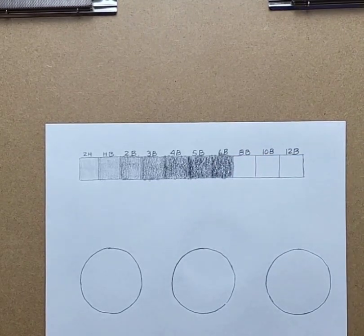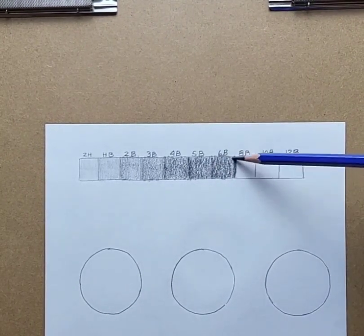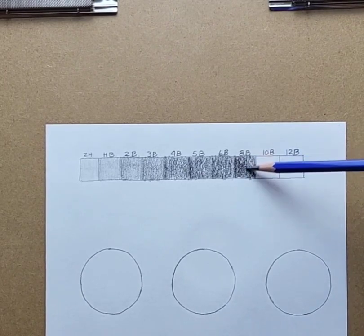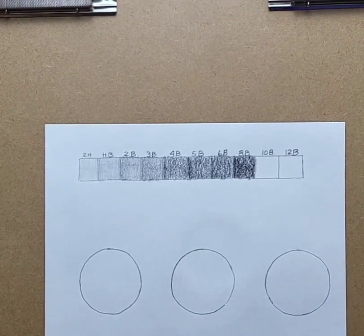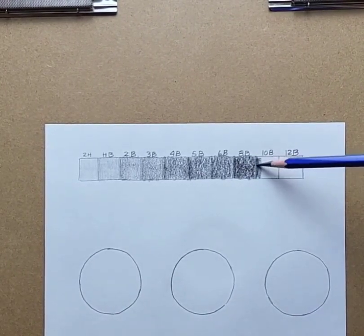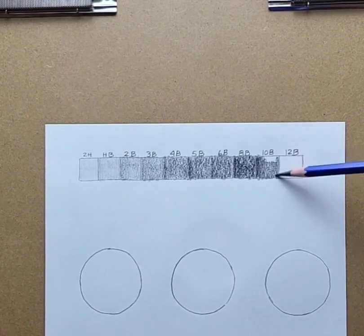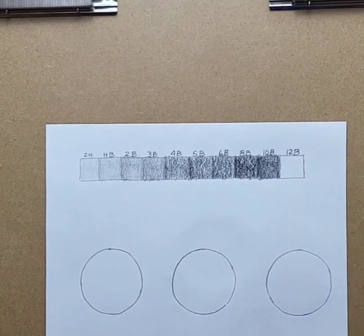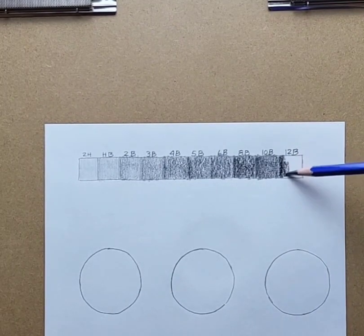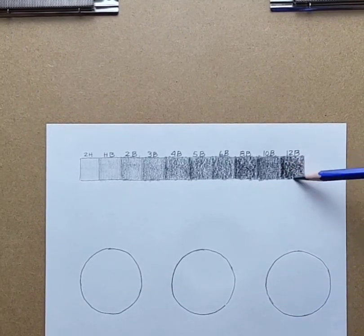No graphite pencil is actually black, but it is a designation because you're going for darkness. So no matter how dark you get, it's really just a dark gray.